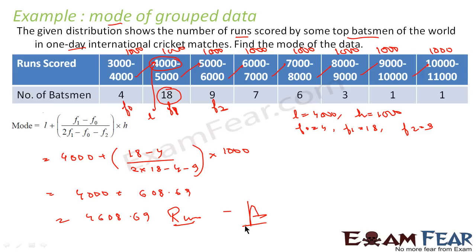It's very simple — we just find the modal class, which has the maximum frequency. Once we have the modal class, it becomes f1, the preceding class becomes f0, the succeeding class becomes f2, the lower limit of the modal class becomes L, and h is the class interval size. Put all the values into the formula to get the mode.